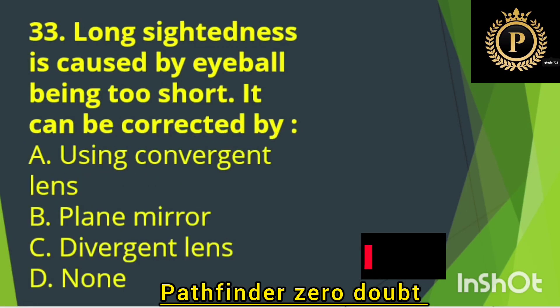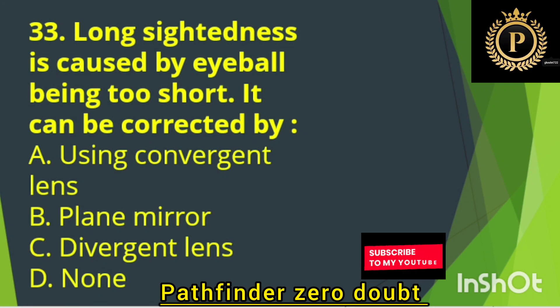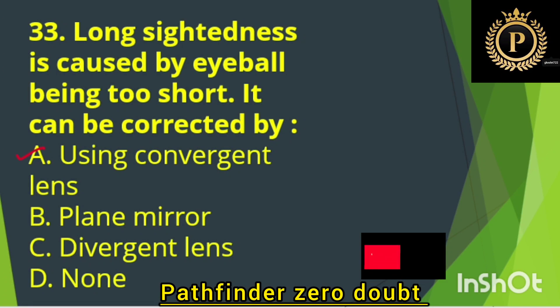Long-sightedness is caused by the eyeball being too short. It can be corrected by — Option A: Using a convergent lens.